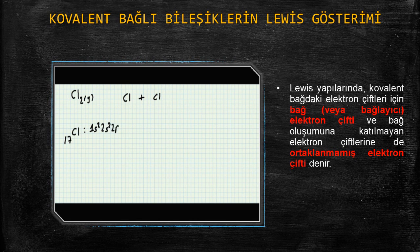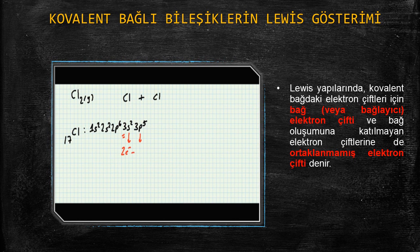2s2, 2p6, 3s2, 3p5. Klor atomu için en dış tabaka 3. tabakadır. 3. tabakada S orbitalinde 2 elektron, P orbitalinde 5 elektron olmak üzere 3. tabakada toplam 7 elektron vardır.